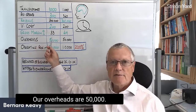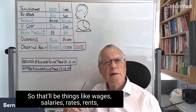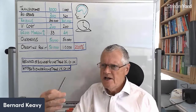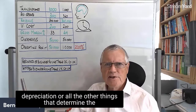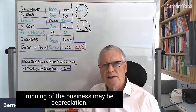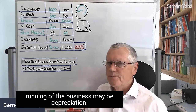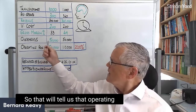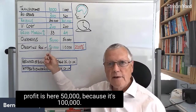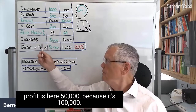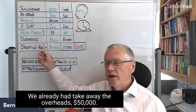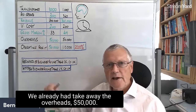Our overheads are fifty thousand. So that will be things like wages, salaries, rates, rents, depreciation, and all the other things that determine the running of the business. That tells us our operating profit is fifty thousand, because it's the hundred thousand gross profit we already had, take away the overheads of fifty thousand.